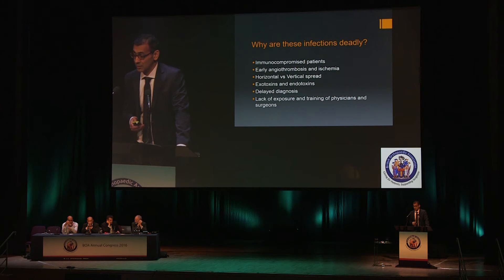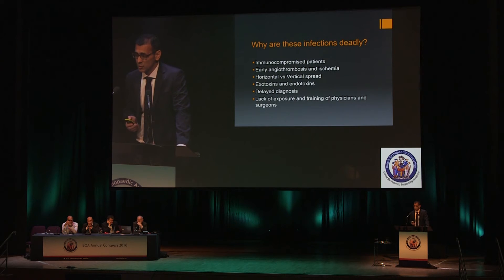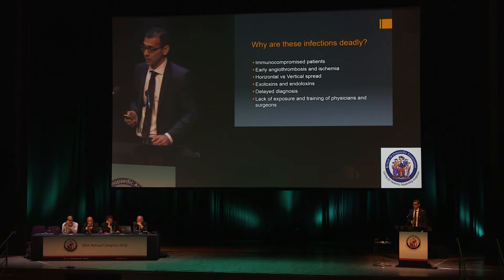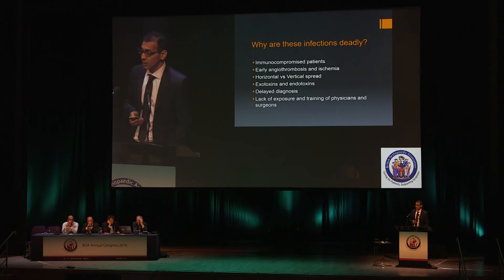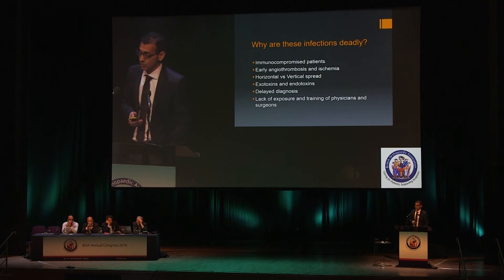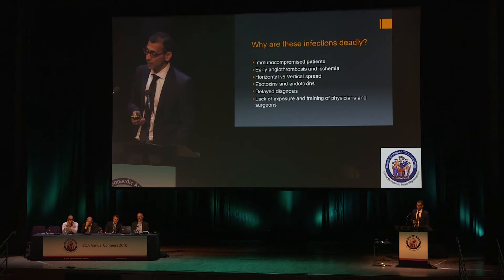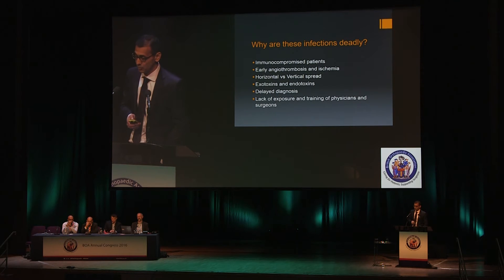These organisms release angiothrombotic factors and develop an area of ischemia, which means we cannot get antibiotics to it. The only way to get rid of this is with surgical debridement. Unlike other infections that spread vertically, these go in a horizontal method above the layer of the deep fascia. The lymphatic channels are blocked very early, so there is no lymphatic spread. Endotoxins and exotoxins increase virulence. One of the biggest problems is that we delay the diagnosis — they quite often look like cellulitis.